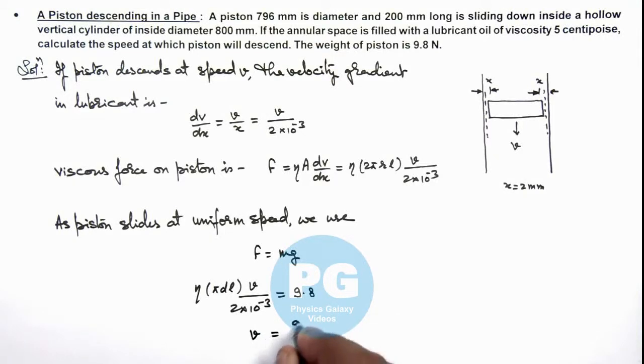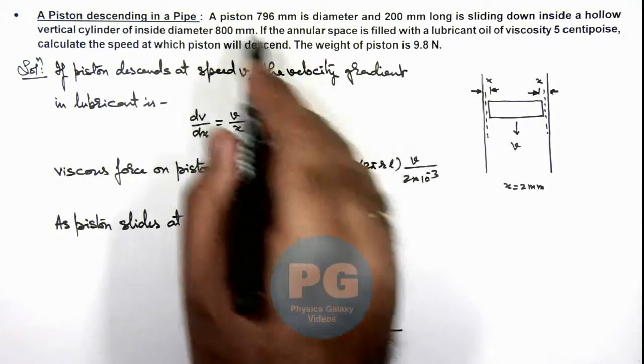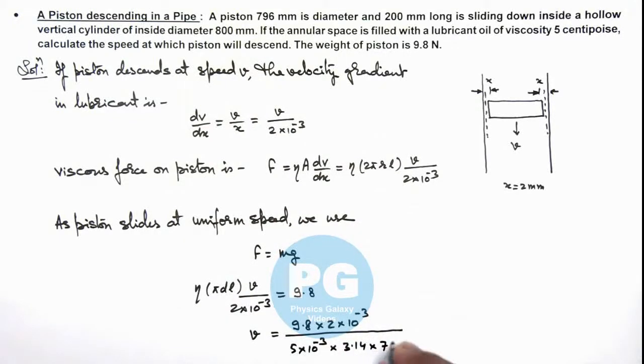Divided by the values, here the coefficient of viscosity is given as 5 centipoise. So we can substitute for eta as 5 into 10 to power minus 3 multiplied by pi is 3.14, and d l diameter we are given with 796, so this is 796 into 10 to power minus 3, and length is 200 mm so this is 200 into 10 to power minus 3.